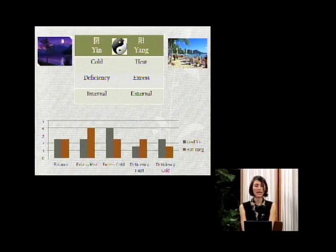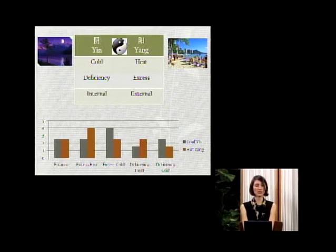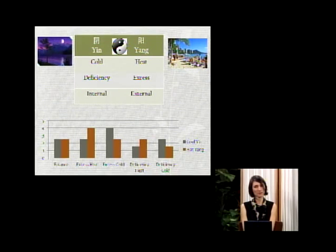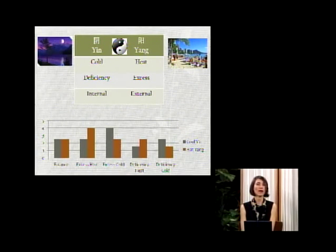We pick out the basic qualities of cold and heat, deficiency — not having enough of something — and excess — having too much of something — and internal versus external. For our purposes today, most diseases are classified as internal. If we stick with cold and heat, deficiency and excess, we can pair these ideas together in four different patterns of imbalance. At the bottom of the screen you can see a little graph: the gray bars represent the nourishing, cooling, moisturizing qualities of water, and the red bars represent the active, hot qualities of the sun.